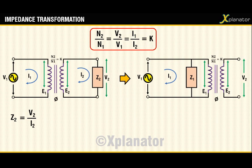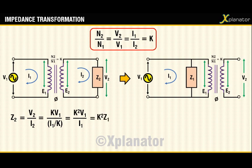Using these relations, v2 is written as k times v1, and i2 is i1 divided by k. Simplifying this you get k² times v1 divided by i1, that is z2 equals k² times z1.